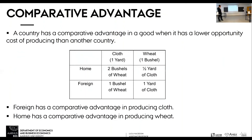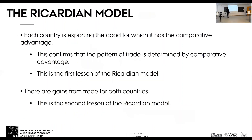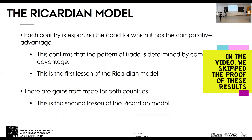Trade is determined by comparative advantage. The home country has a comparative advantage in wheat, so it's going to export wheat. The foreign country has a comparative advantage in cloth, and therefore it exports cloth. To wrap up: trade patterns — who exports what and who imports what — are determined by comparative advantage. That's the main point of the Ricardian model. The second point is that trade is a good thing, at least in aggregate, because the utility function is higher in both countries when they trade.